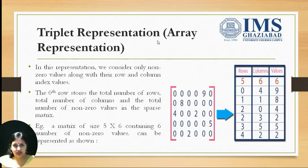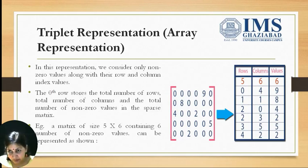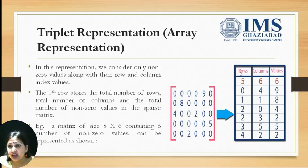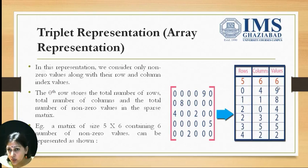First, triplet representation. In this representation, we consider only non-zero values along with their row and column index values. We use a triplet of row, column, and value. The first row — the 0th row — represents the total number of rows in the sparse matrix, the total number of columns, and the total number of non-zero values.